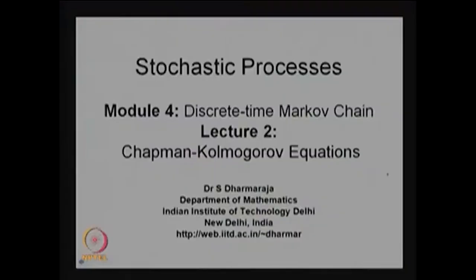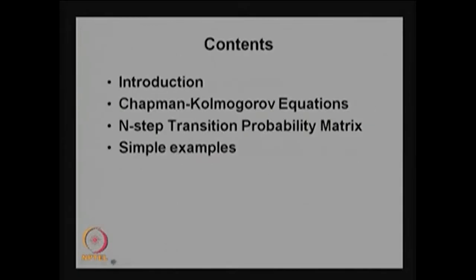Good morning. This is Stochastic Process Model 4: Discrete Time Markov Chain. This is Lecture 2, and in this lecture we are going to discuss the Chapman-Kolmogorov equations, the n-step transition probability matrix, and a few more examples.